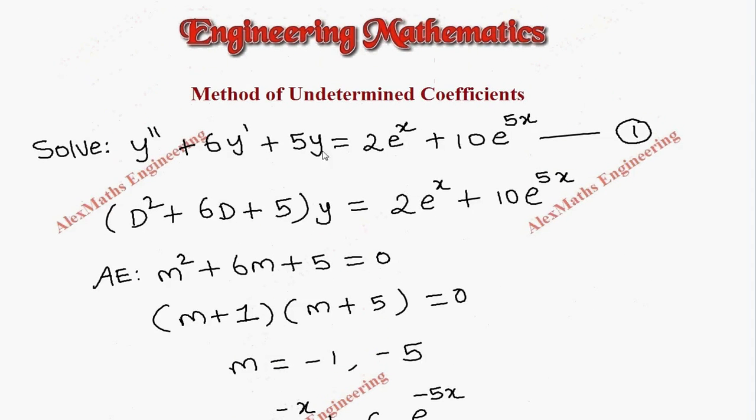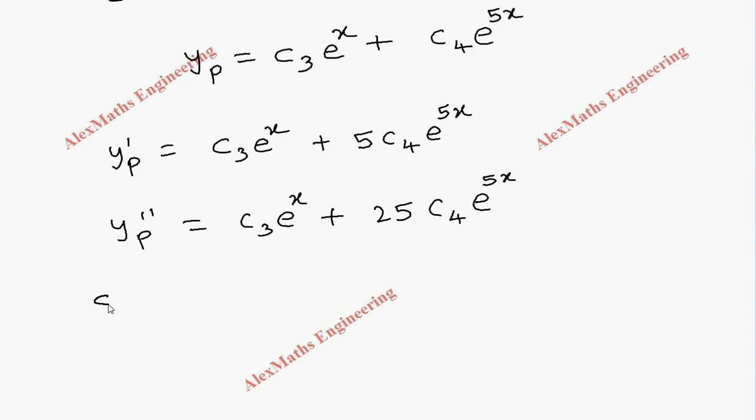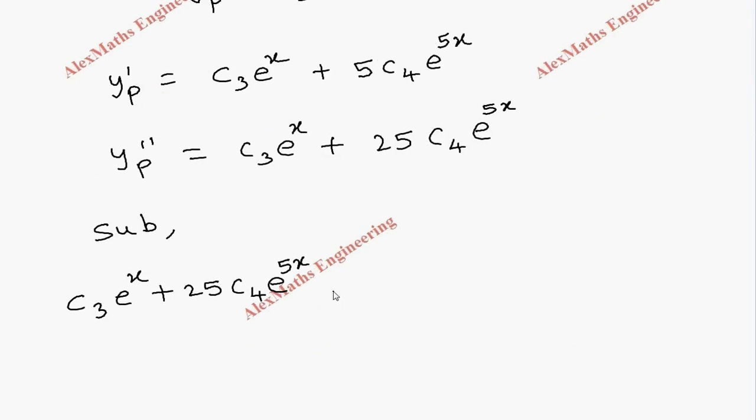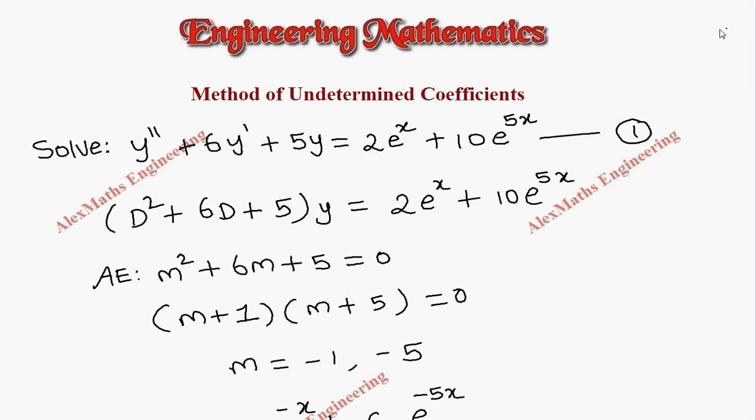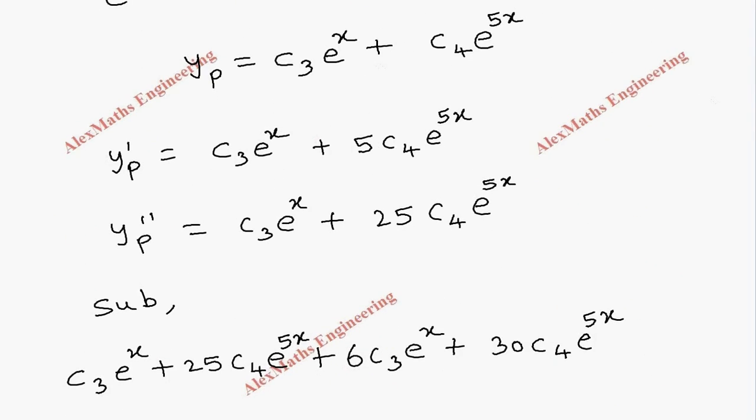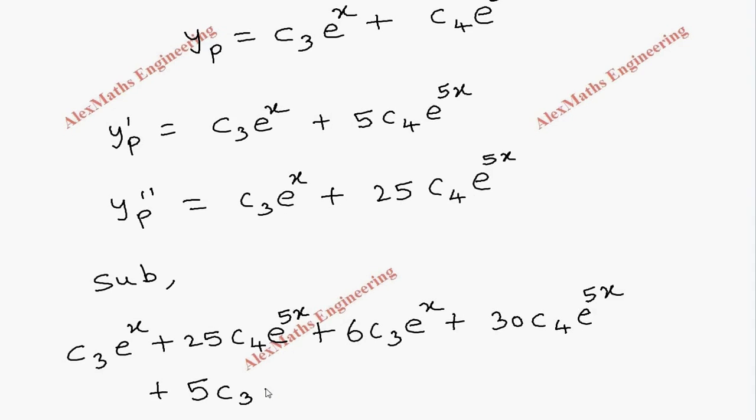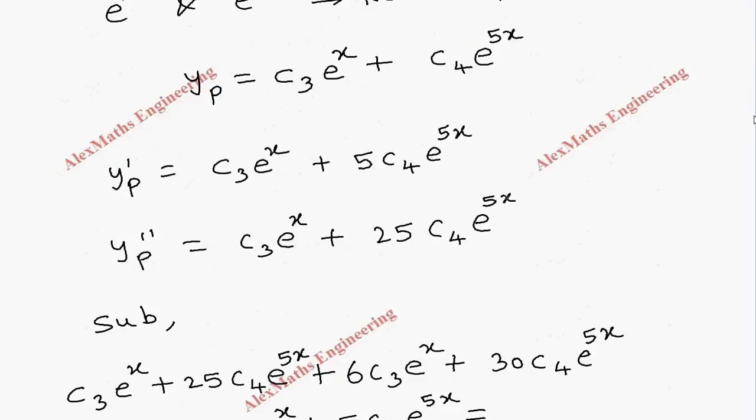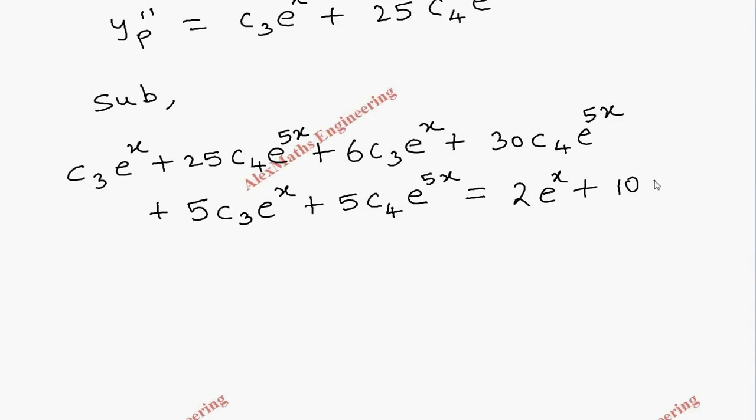Now, let's substitute all this thing in the equation y double dash. So, now substituting we get c3 e power x plus 25c4 e power 5x. Then, plus 6 y dash. So, 6 c3 e power x plus 30 c4 e power 5x. And, the last term is 5y. So, 5c3 e power x plus 5c4 e power 5x. And, on the other side, we have 2 e power x plus 10 e power 5x.